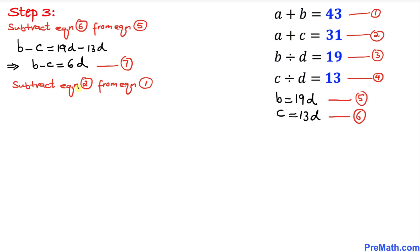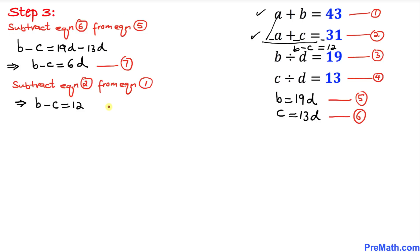Now we are going to subtract equation two from equation one. When we do that, the A terms cancel out and we get B minus C equals 43 minus 31, which gives us B minus C equals 12. I'll call this equation number eight.